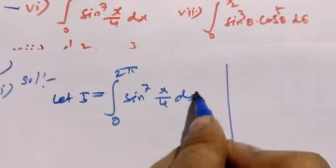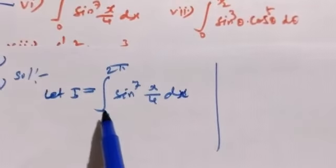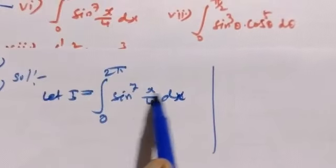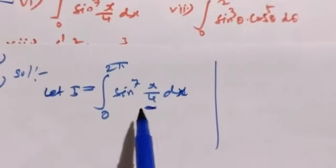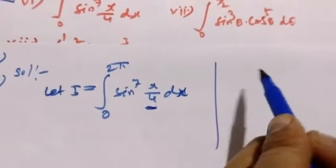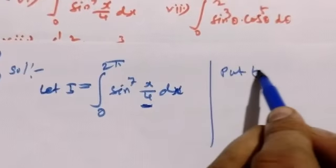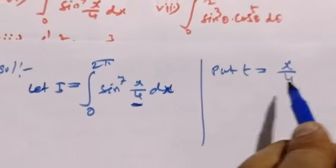Let I equal integral 0 to 2π, sin power 7, x by 4, dx. We'll use the reduction formula, limit 0 to π, coefficient 1 by 4.